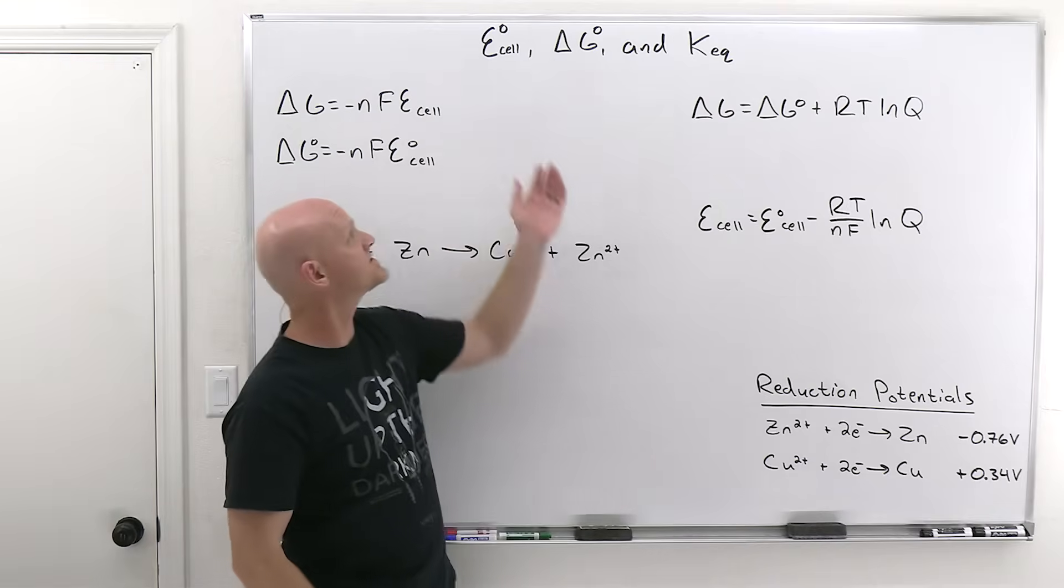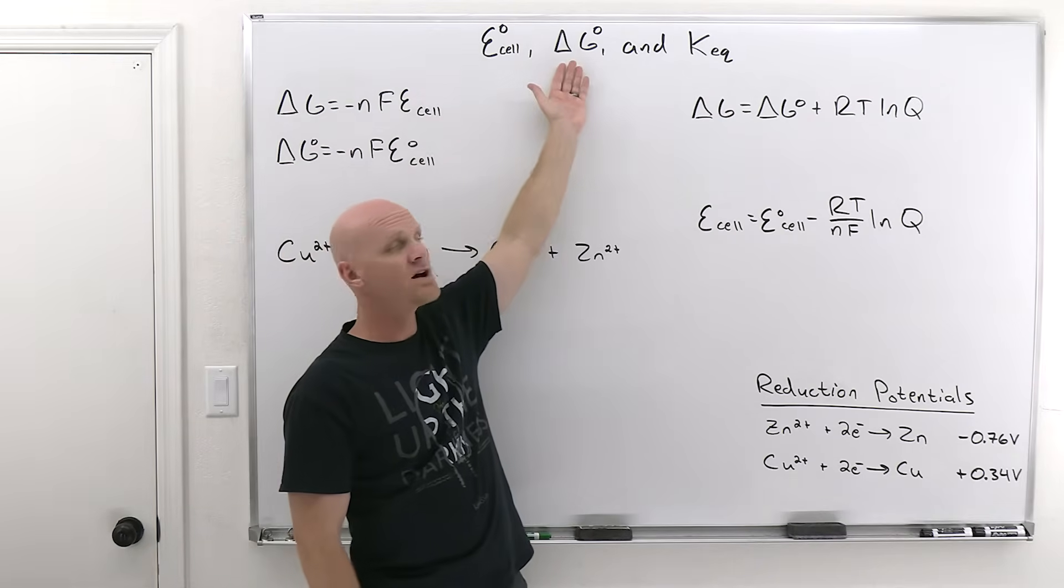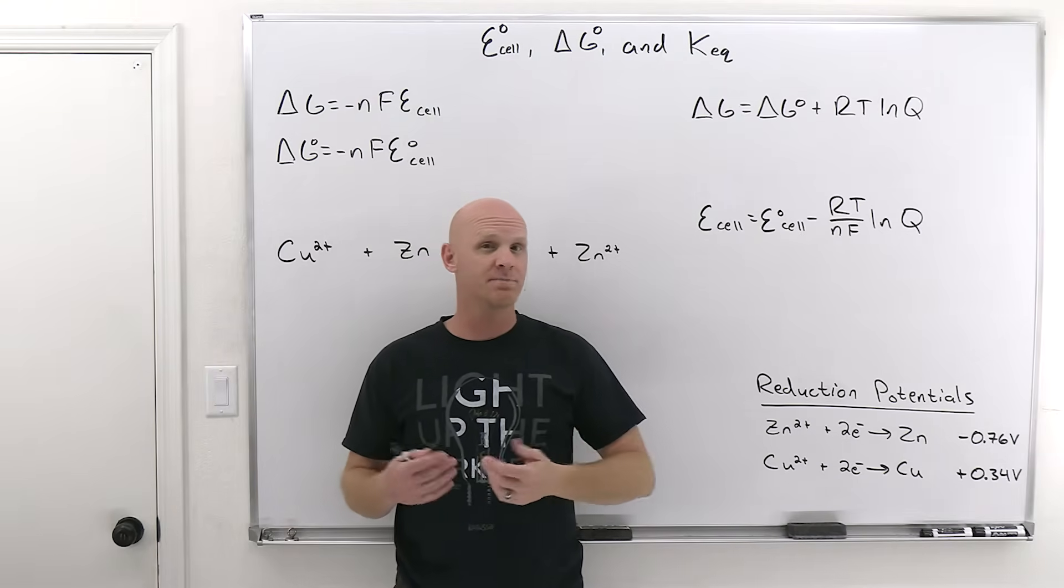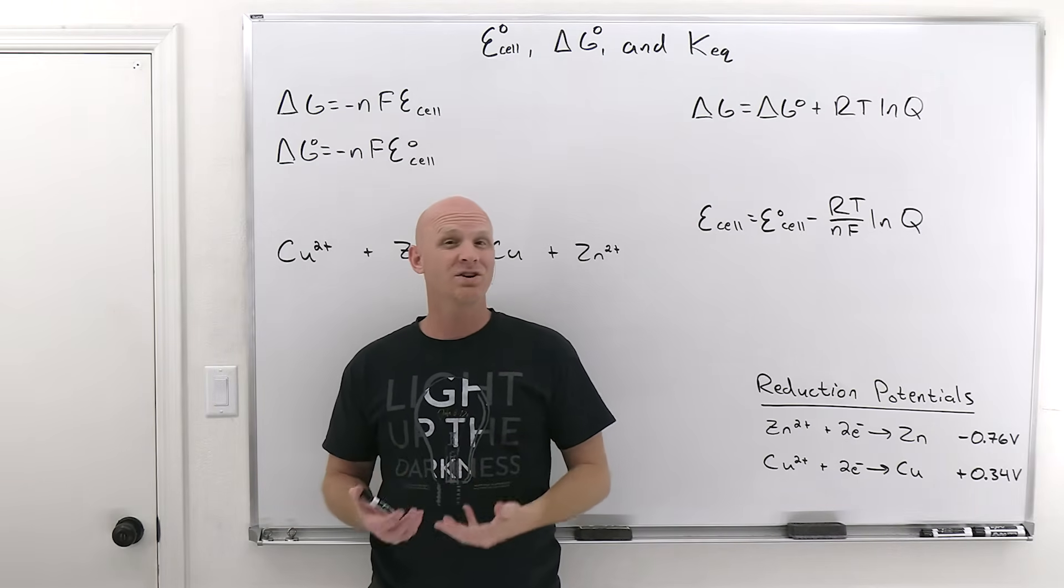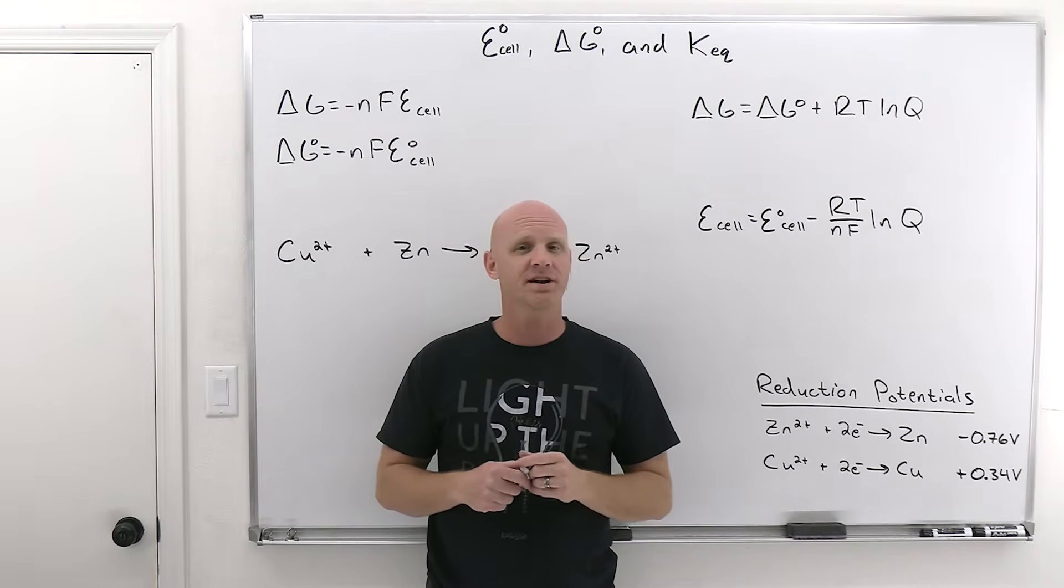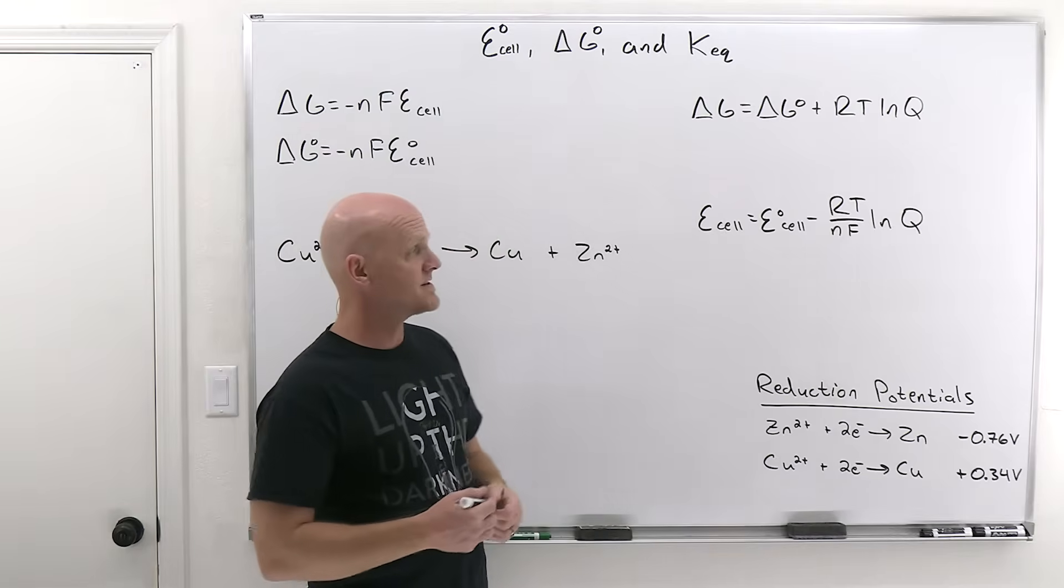All right, so it turns out that your standard E cell, your standard value for delta G, and your equilibrium constant are all mathematically related. They're all mathematically interdependent, in fact. So if you know one, you actually can calculate the other two, and you could be on the hook for just such an occasion, and we're going to do an example of exactly this.